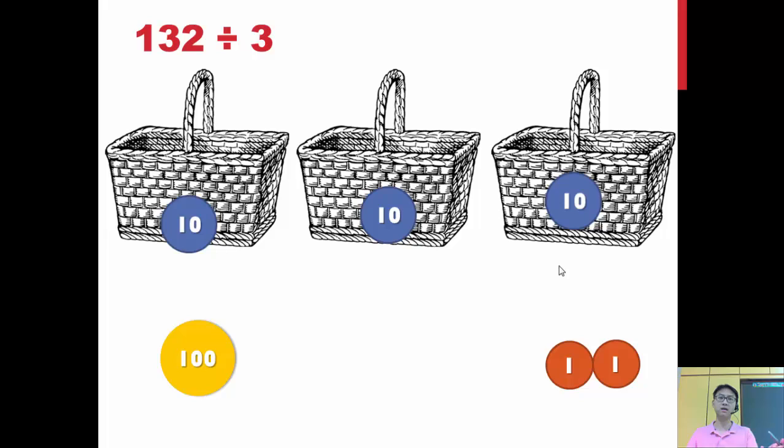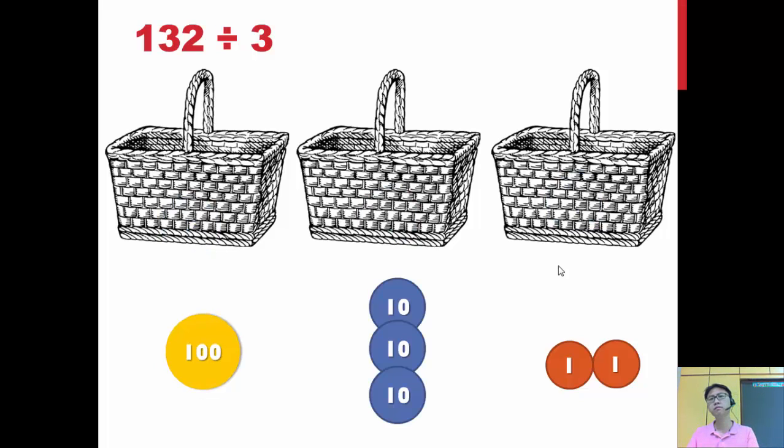How about starting with the tens place first? So tens place can, just nice, each 10 in one basket. Very good. But how about my hundreds place? Where is it going to go? How am I going to break it up and tear it into pieces and put it into the 3 baskets? So I can't do that.